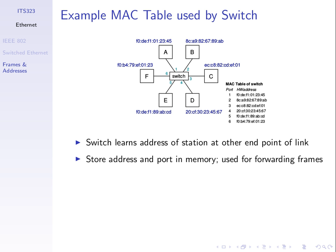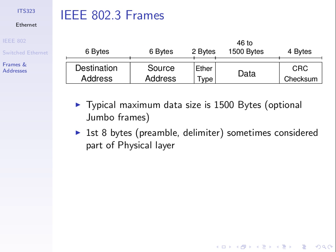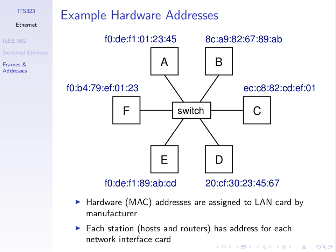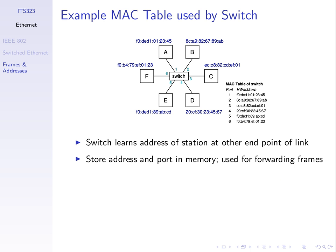If B wants to send to E, it creates a frame with the destination address as the MAC address of E and source address as the MAC address of B, puts the data inside, transmits the frame to the switch. The switch recognizes that destination address needs to go on port five and transmits it. This allows any pair of stations to communicate with each other.